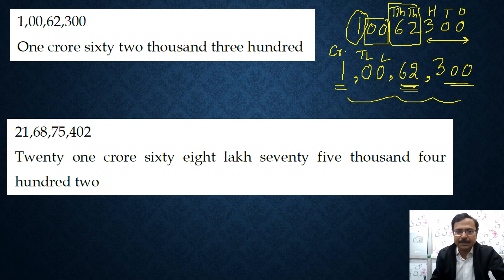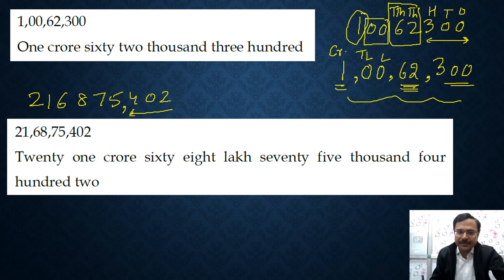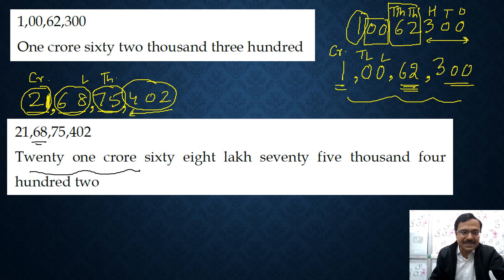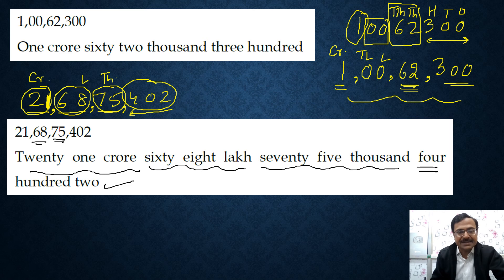Let's have one more example. Look at the number 216875402. A triple from the right-hand side, then a comma, then a double and a comma, then a double and a comma, and then a double. The hundreds, thousands, lakhs, and crores are formed. The first two digits, 21, are crores — so 21 crore. Next two digits, 68, are lakhs — 68 lakhs. Then 75 gives 75,000. And the last three digits 402 is simply 402. That's how you name and put commas in the Indian system of numeration.